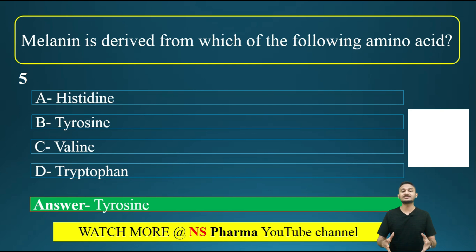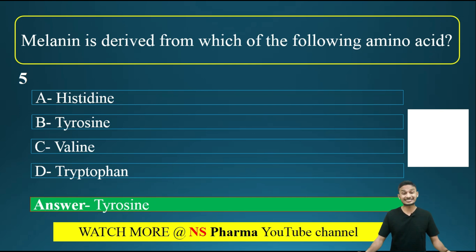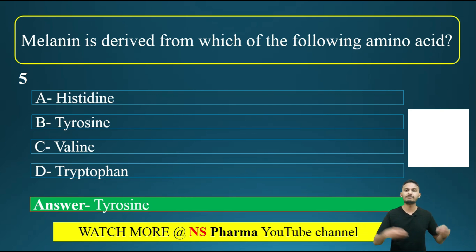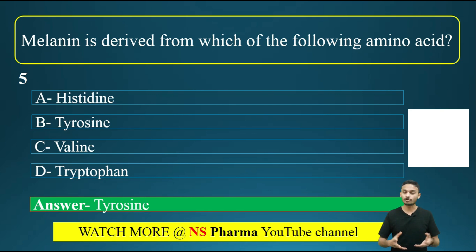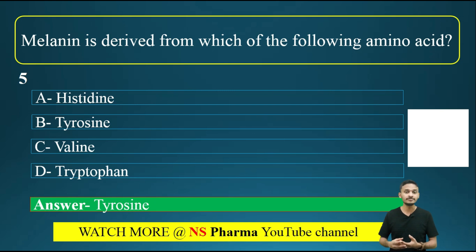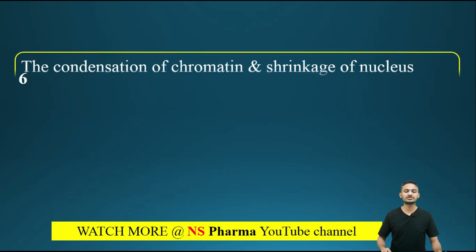Note that melatonin, which is a hormone, is derived from tryptophan. So melanin is a pigment derived from tyrosine, while melatonin is a hormone derived from tryptophan. Now moving to question number 6.